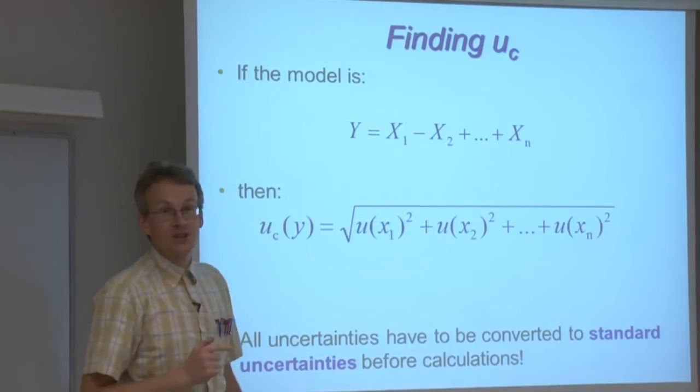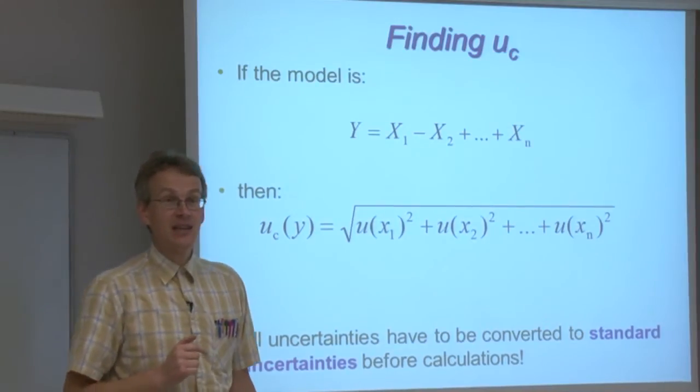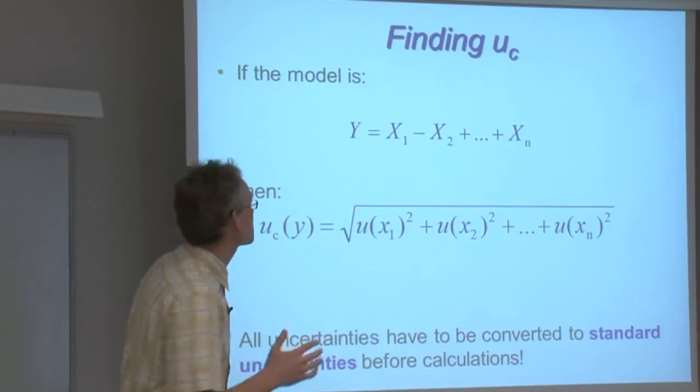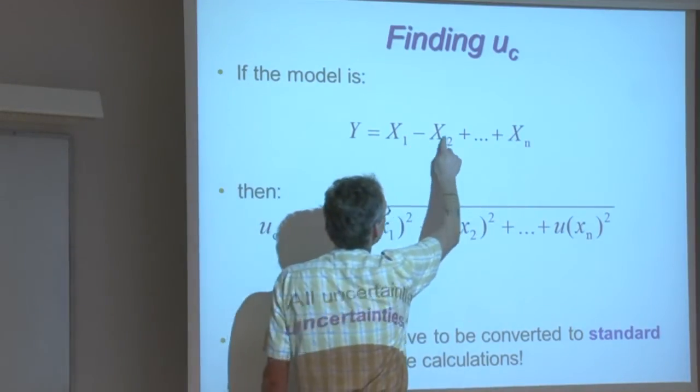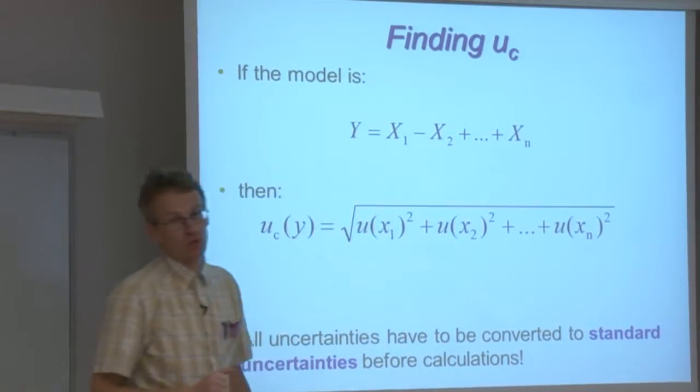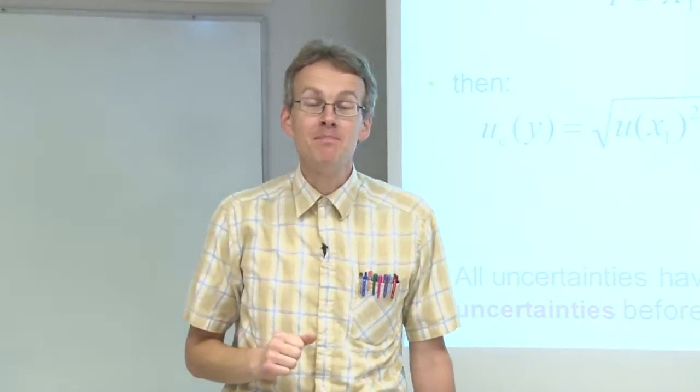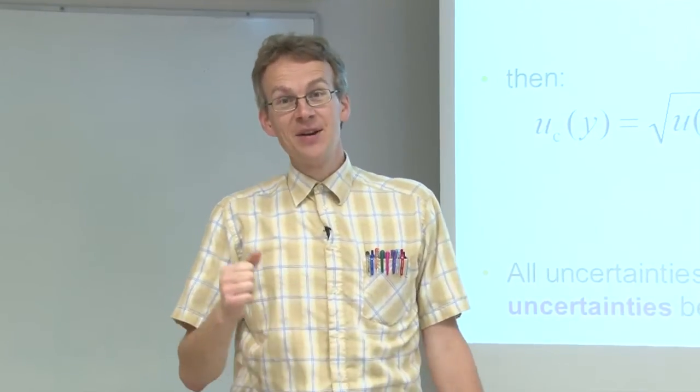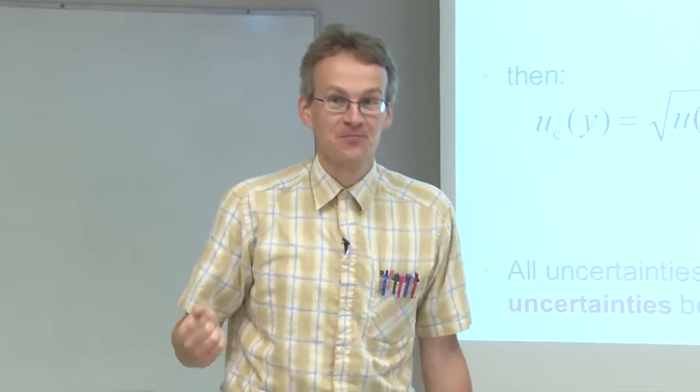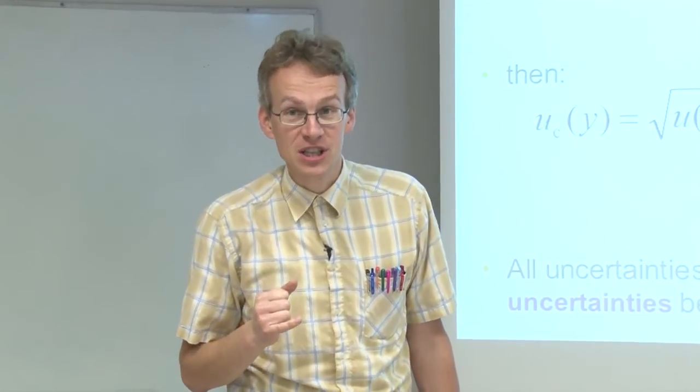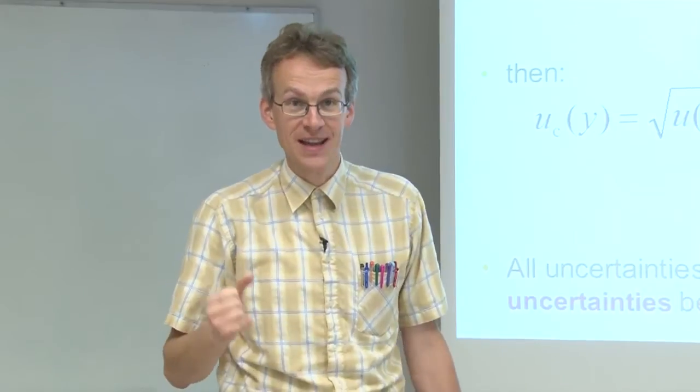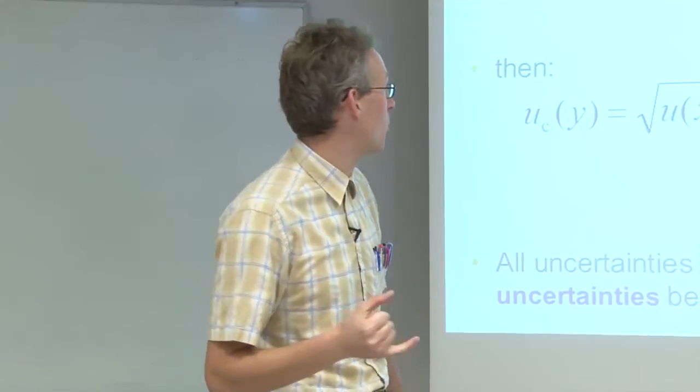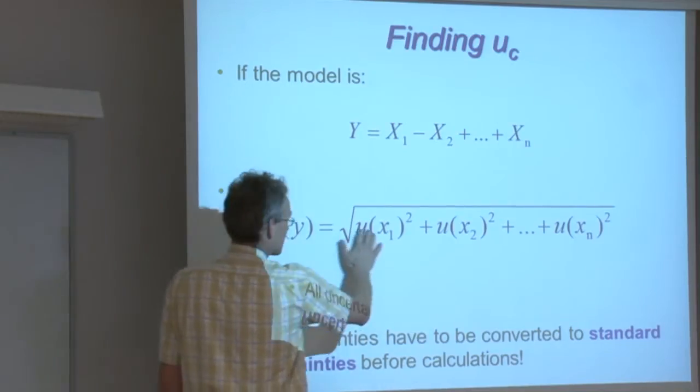So first of all, the simplest case that can be is that all the factors or all the input quantities are simply summed or subtracted to get for us the output quantity value. A typical case where this sort of equation holds is the volume of a pipette, where the different uncertainty sources can be considered as factors or input quantities, and their uncertainties are then combined according to this simple rule which we have already seen.